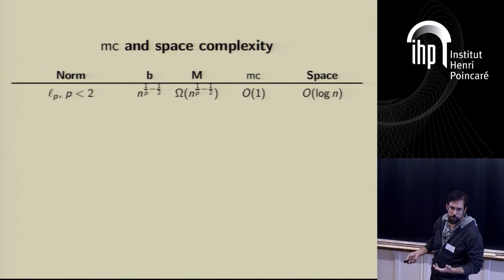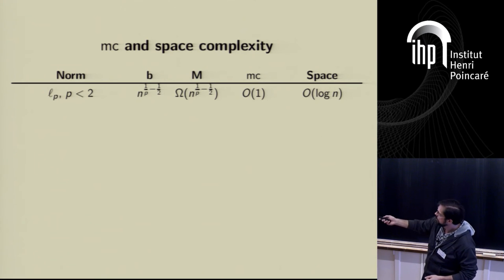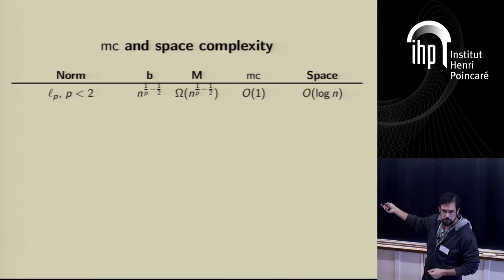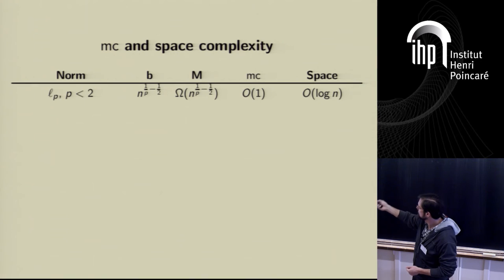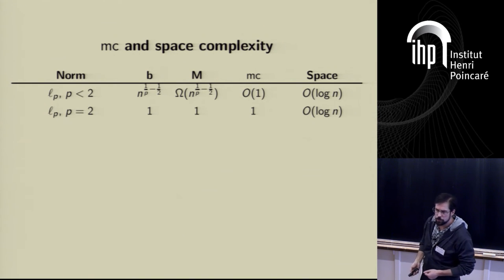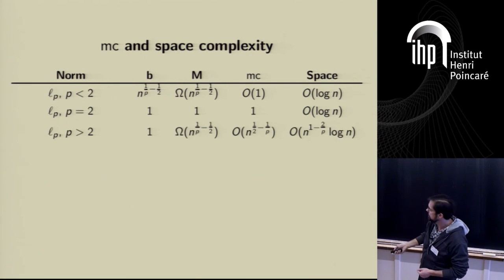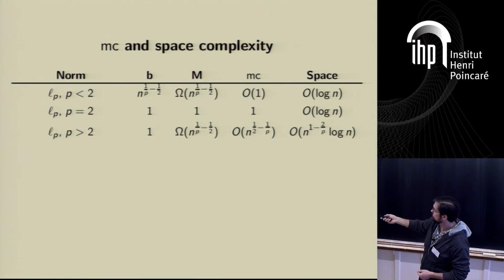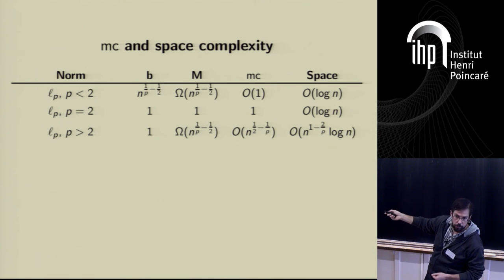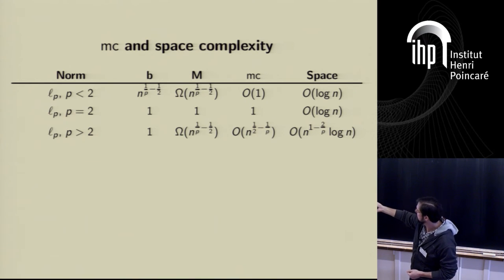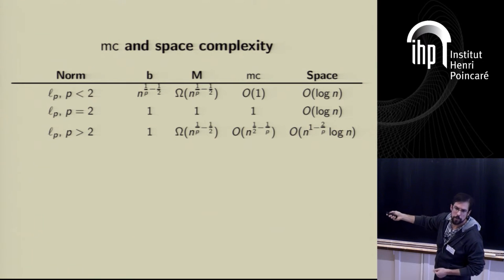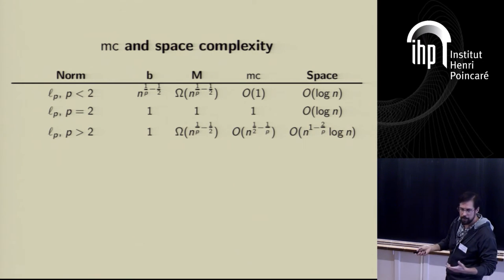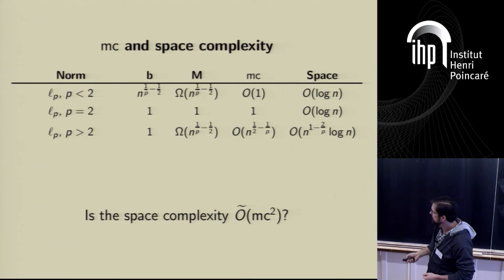Now let's talk about upper bounds. For LP norms with p < 2, b and m are the same order, so mc^2 is about 1 and space is log n. For p = 2, b and m are exactly one, mc is exactly one, space is log n bits. For LP norms with p > 2, mc is n^{1/2 - 1/p} and space complexity is mc^2 × log n bits. So we have upper and lower bounds that seem to match. But is that the right answer? No.